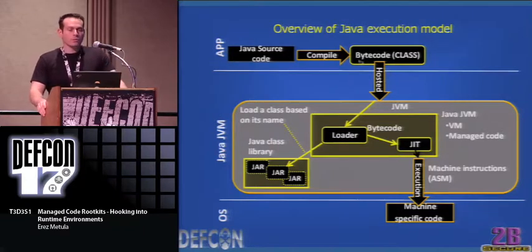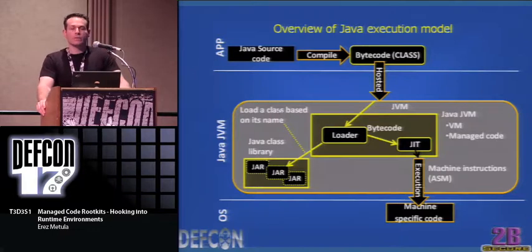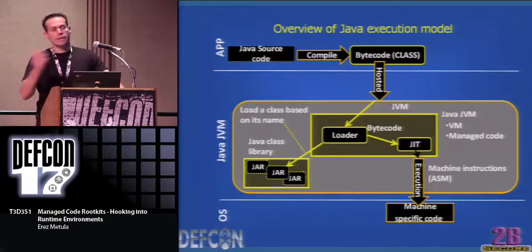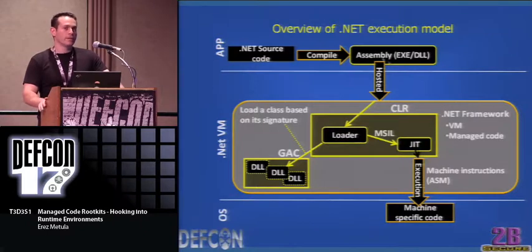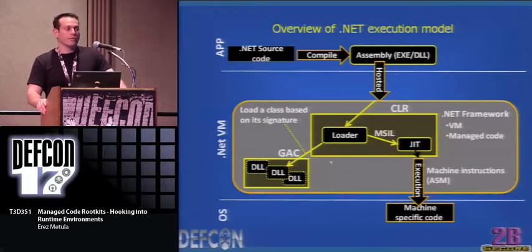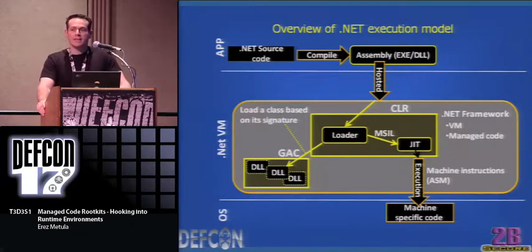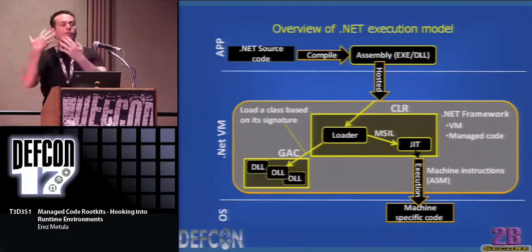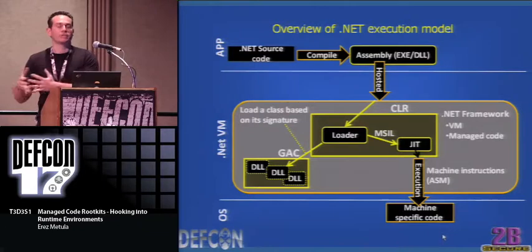What are managed code rootkits, or MCRs? Managed code rootkits are user-mode, application-level rootkits hidden inside the managed code environment libraries. In user mode, although you sacrifice a little bit of hiding, you can do very sophisticated attacks — sophisticated logical attacks. The target of MCRs is the virtual machine that provides services to the upper-level application. We are hiding information from the application, not from the OS — we're hiding it from applications.